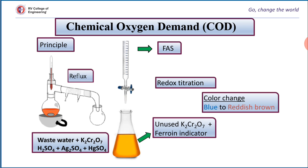The unreacted potassium dichromate is titrated against standard ferrous ammonium sulphate (FAS) using ferroin as an indicator. The titer value corresponds to the volume of potassium dichromate left behind after the redox titration — this is called the back titration, and the titer value is called the back titer value. One more titration is carried out without the wastewater sample; this is called the blank titration, and the titer value is called the blank titer value. The difference between these two titer values corresponds to the amount of potassium dichromate reacted with the impurities, expressed in terms of FAS. Using chemical equivalence, COD of the sample can be calculated.